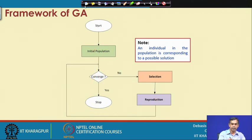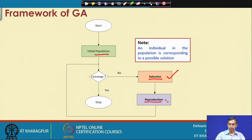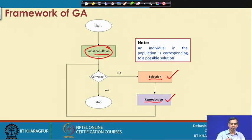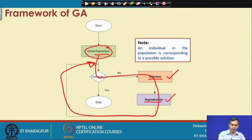The three important concepts are population, selection, and reproduction. Selection follows the concept of evolution proposed by Charles Darwin, and reproduction is based on the concept of genetics proposed by Gregor Johann Mendel. The idea is that from a current initial population, the process moves to generate a new population and iterates until the search converges to yield the optimum solution.